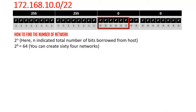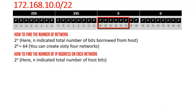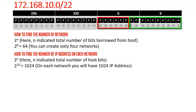Now let's find the number of IP addresses on each network. The formula is again 2 to the power n, but this time n indicates the total number of remaining bits in the host part. Since we borrowed 6 bits from the host, the remaining bits are 8 + 2 = 10. So we calculate 2^10, which equals 1024 — meaning each network has 1024 IP addresses.